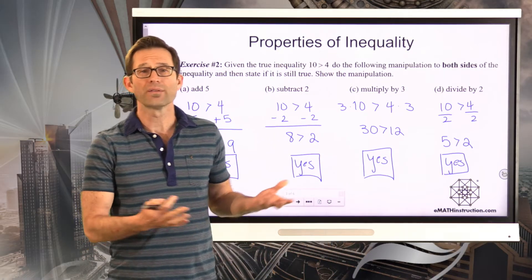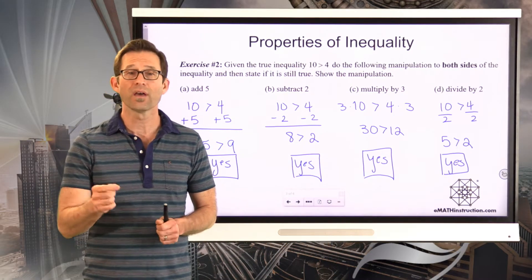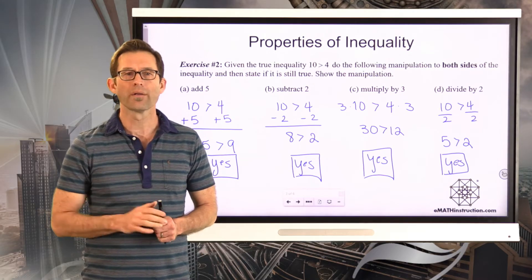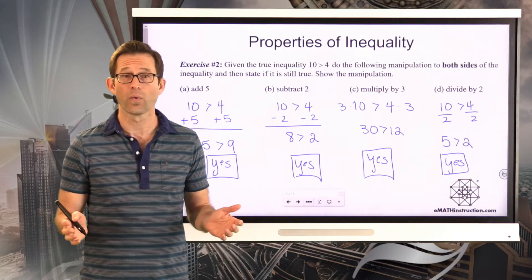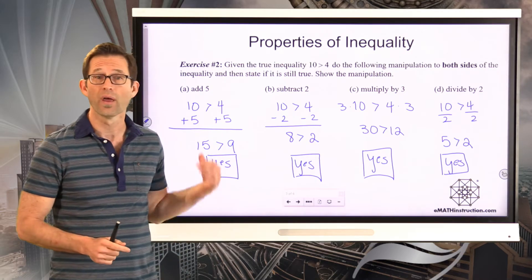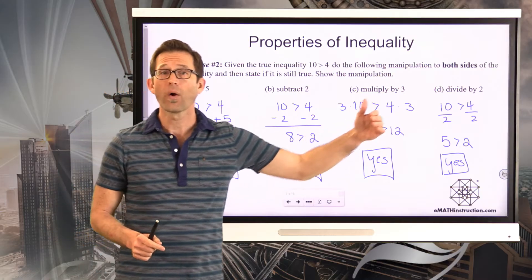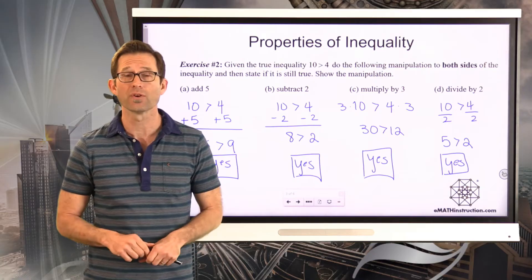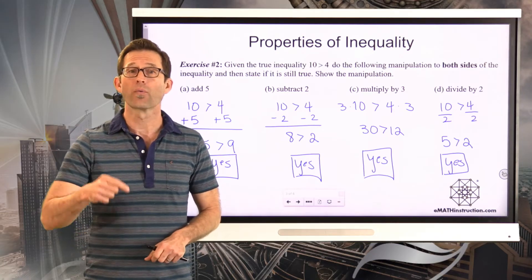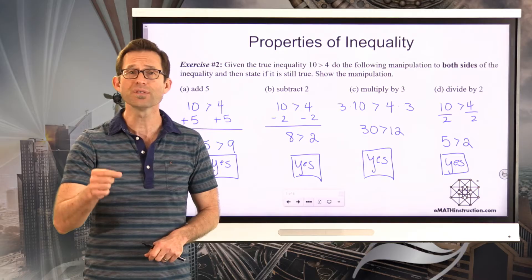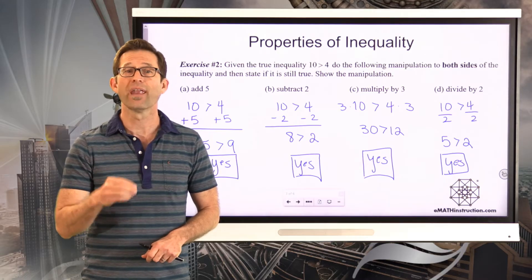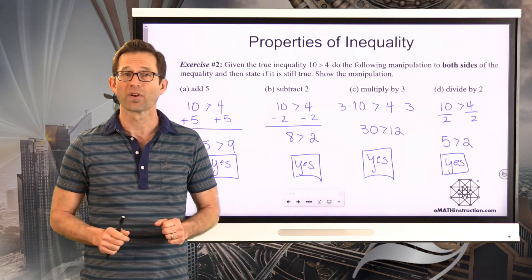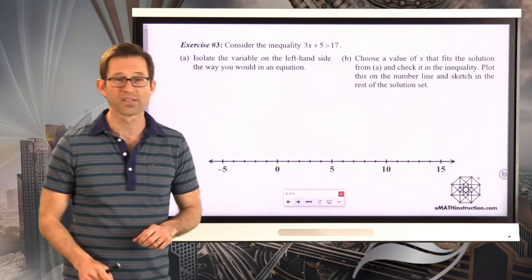So at the end of the day, what does this exercise tell me? It appears that inequalities work exactly like equalities — you can add, subtract, multiply, or divide both sides of the inequality by anything you want, just like with an equation, and the inequality will remain true. We can use these properties to solve an inequality almost identically to how we solve an equation.